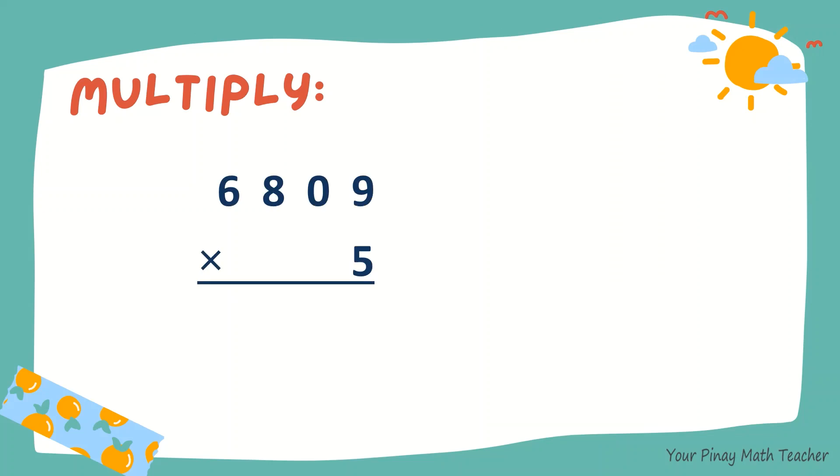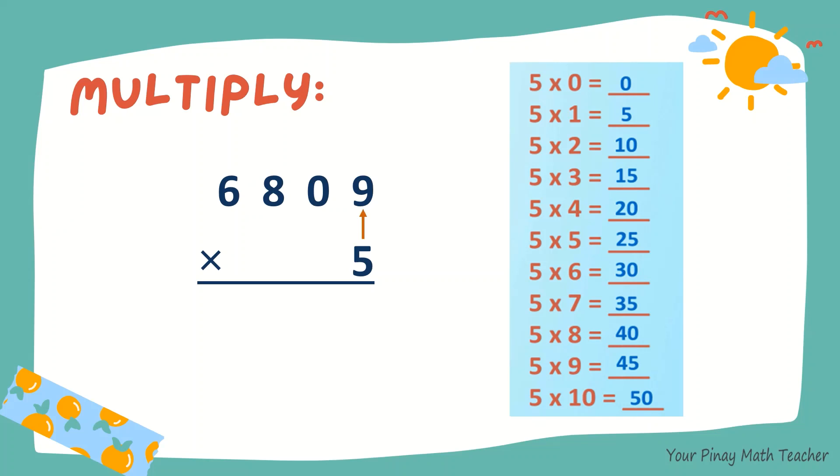Next example. 6,809 times 5. 5 times 9 is 45. So 5, carry 4. 5 times 0 is 0. Plus 4, 4.